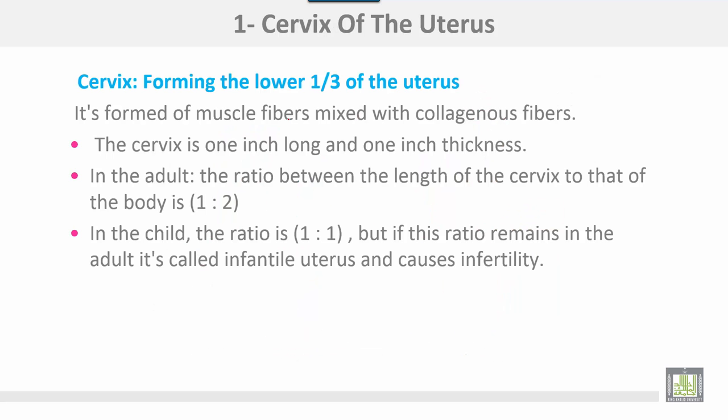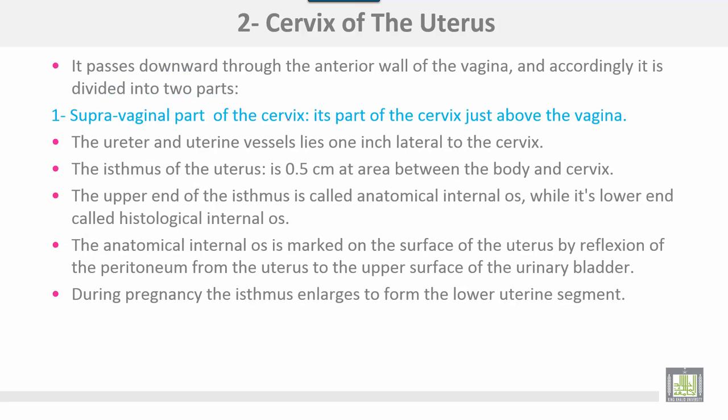The cervix forms the lower third of the uterus and is made of muscle fibers mixed with collagenous fibers. It is one inch in length and one inch in thickness. The ratio between the length of the cervix to that of the body is 1 to 2 in adults. In children the ratio is 1 to 1, but if this ratio remains in the adult it is called infantile uterus and causes infertility.